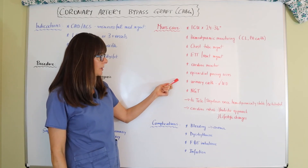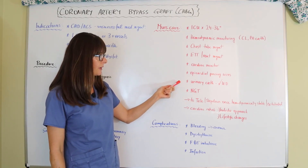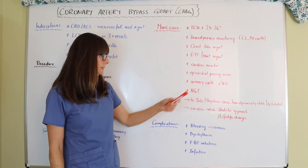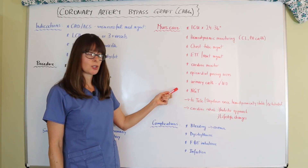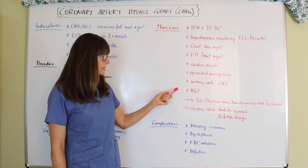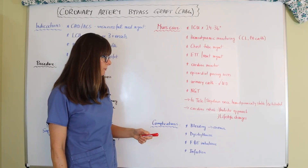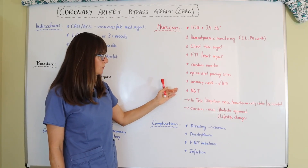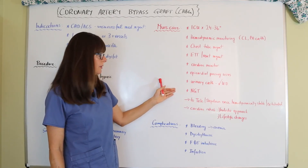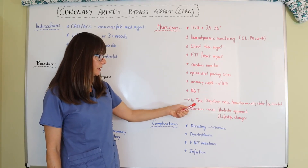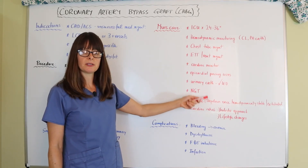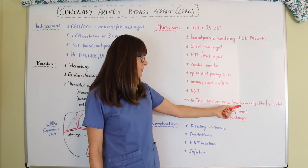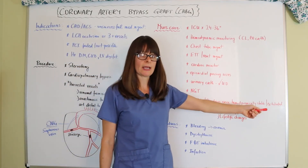The patient will also have a urinary catheter, and we'll check their urine output very closely to monitor perfusion. They will also have an NG tube to deflate the stomach because they are intubated. Once they come out of the acute phase in the post-op period, they will typically be transferred to either the tele floor or step-down unit once the patient is hemodynamically stable and extubated.